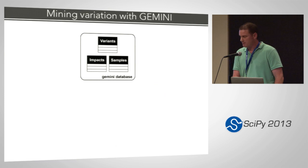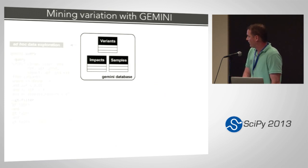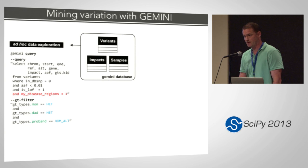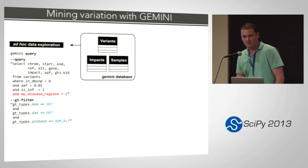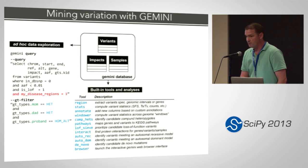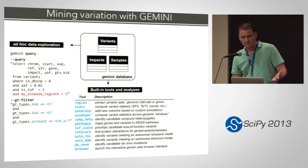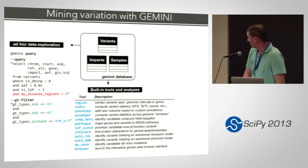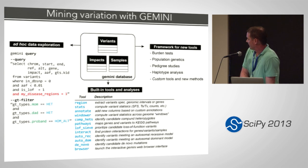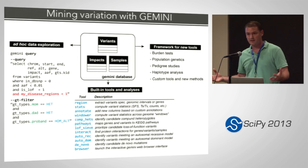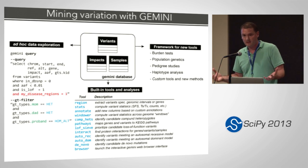Once you have all this data loaded, Gemini is really an API for ad hoc data exploration. Here's an example of a query asking for all genetic variants that are novel, rare — less than one percent allele frequency — or loss of function, and overlap with some disease region you're interested in. You can also automatically ask for variants that meet an autosomal recessive inheritance model. Building on that framework, we can also release command line tools to run a series of common analysis tasks, such as looking for autosomal dominant variants, de novo variants, autosomal recessive, et cetera.